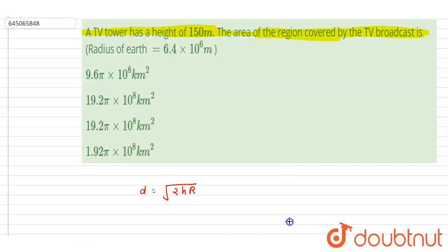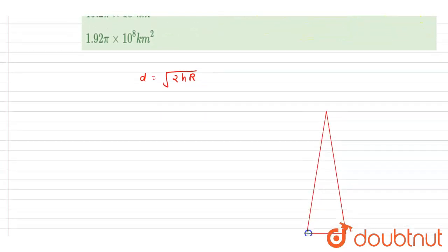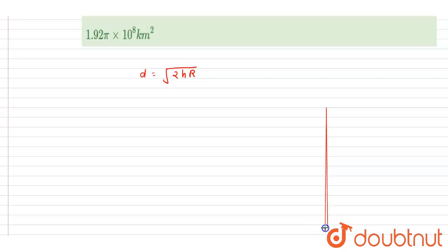If I make a tower, let's say this is a tower. This is a tower and up to this distance d, the signal will be received here.